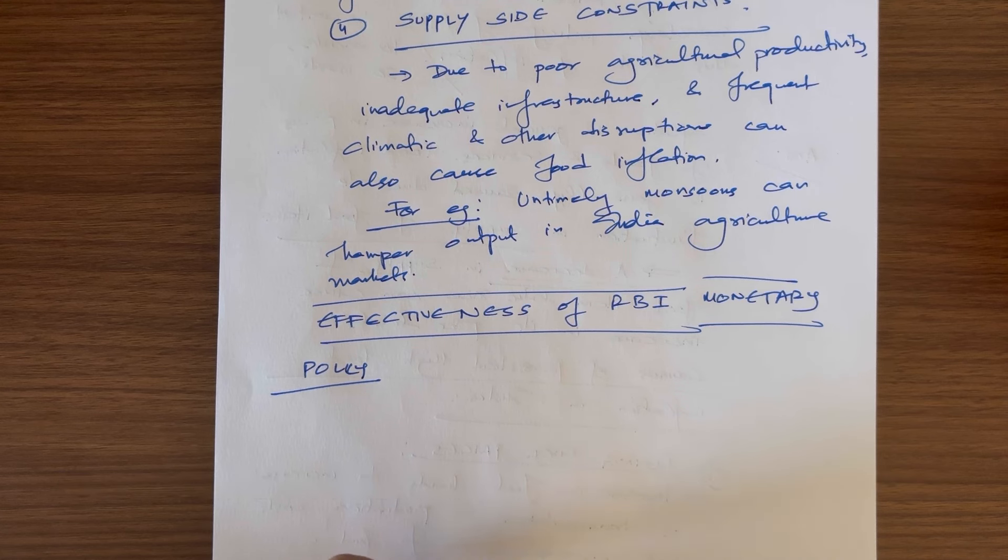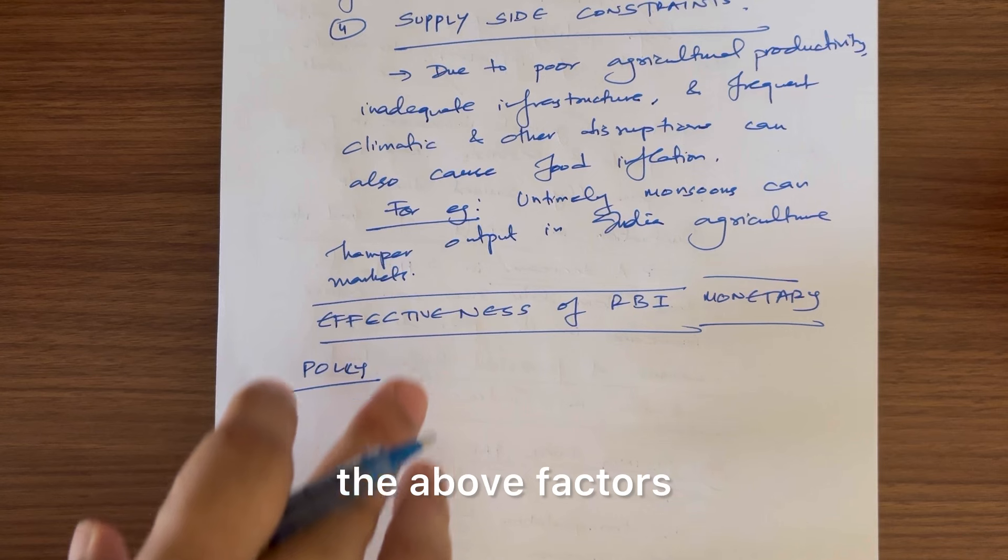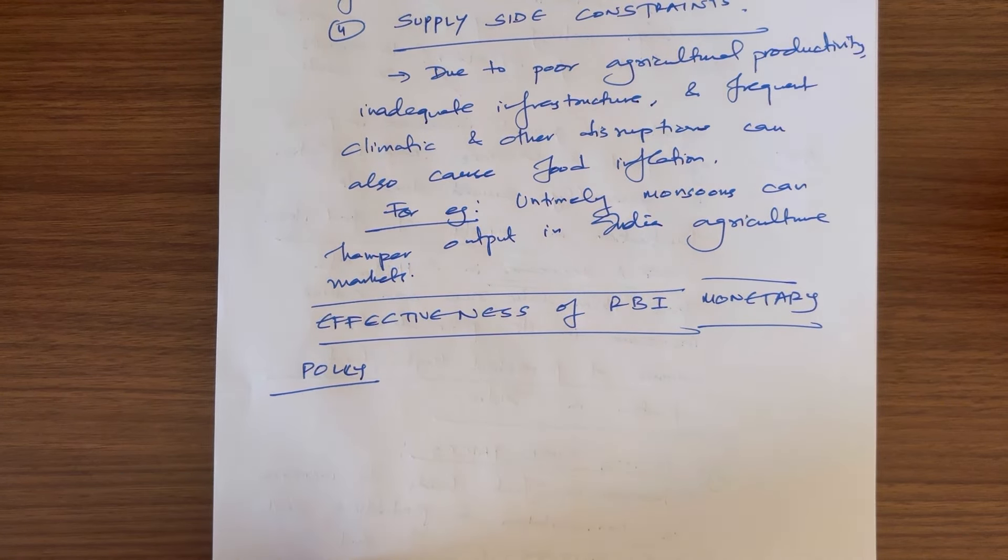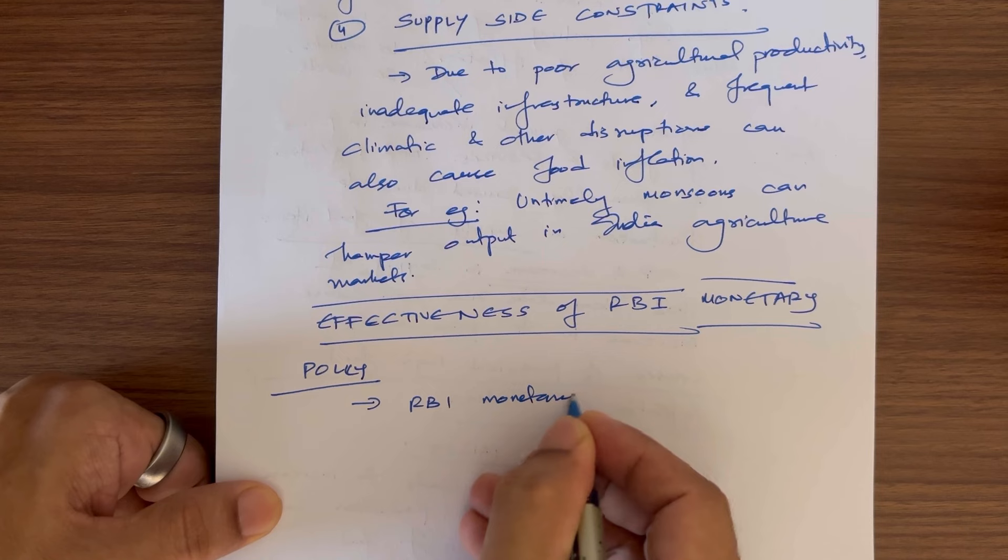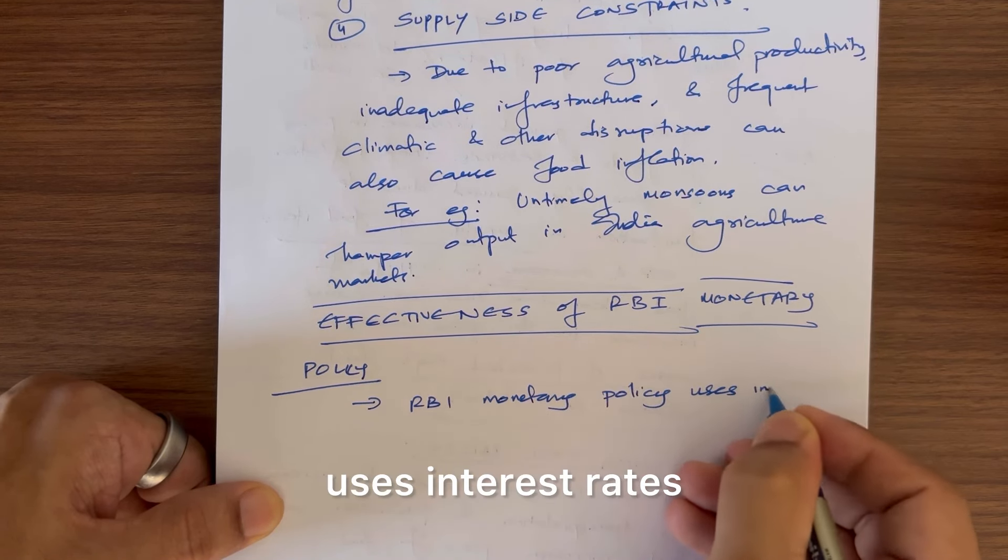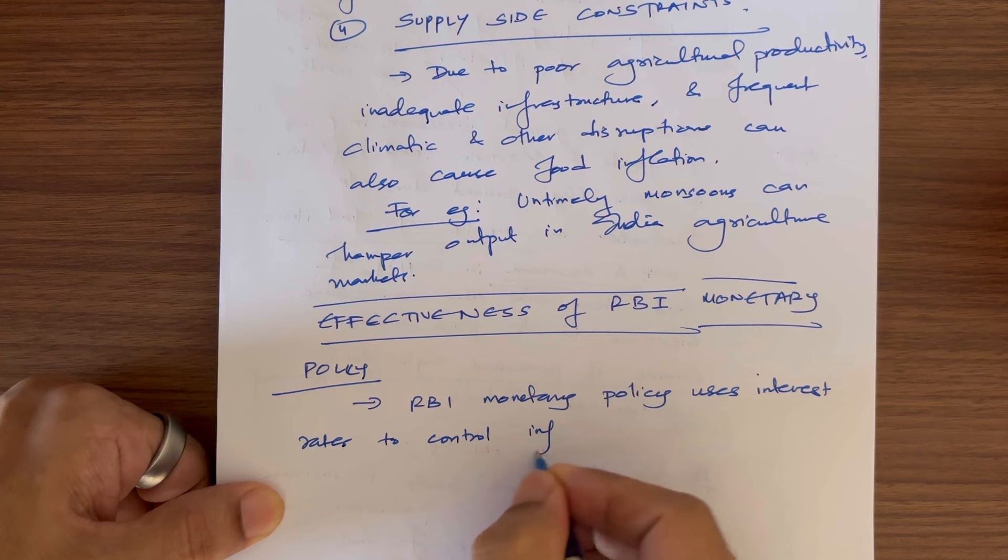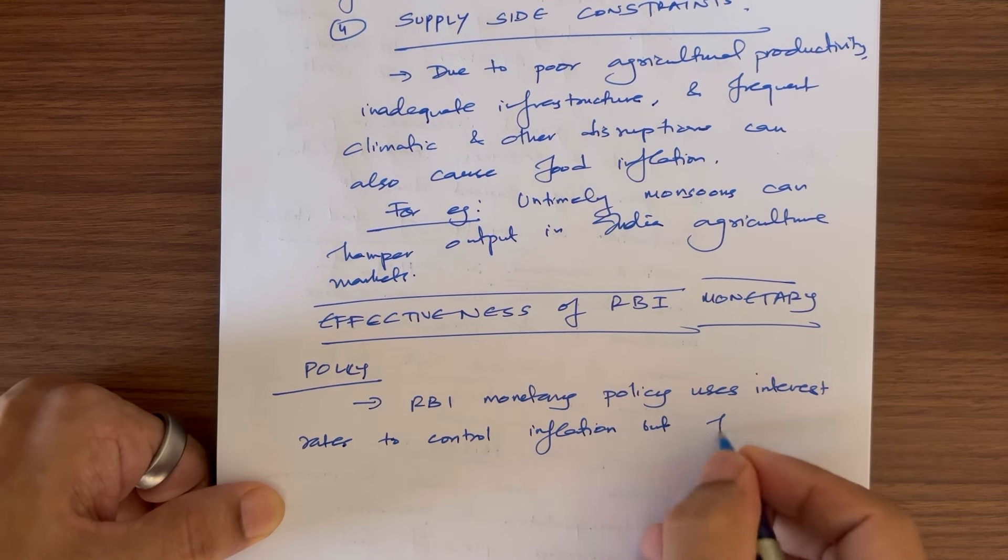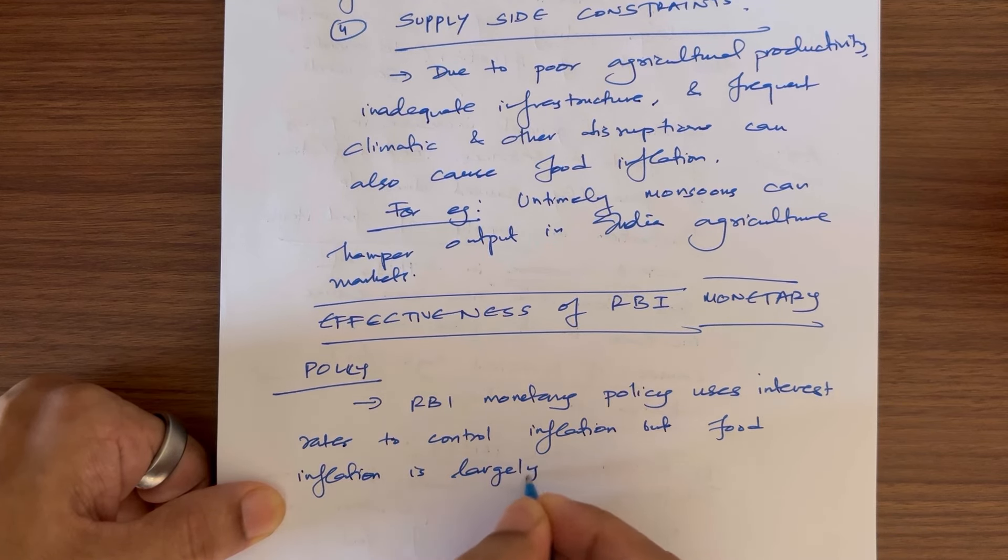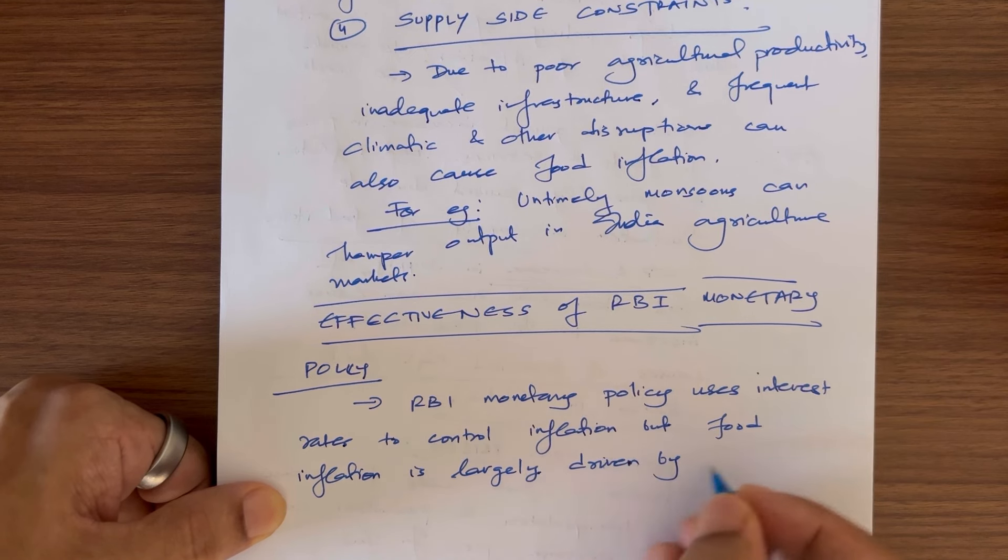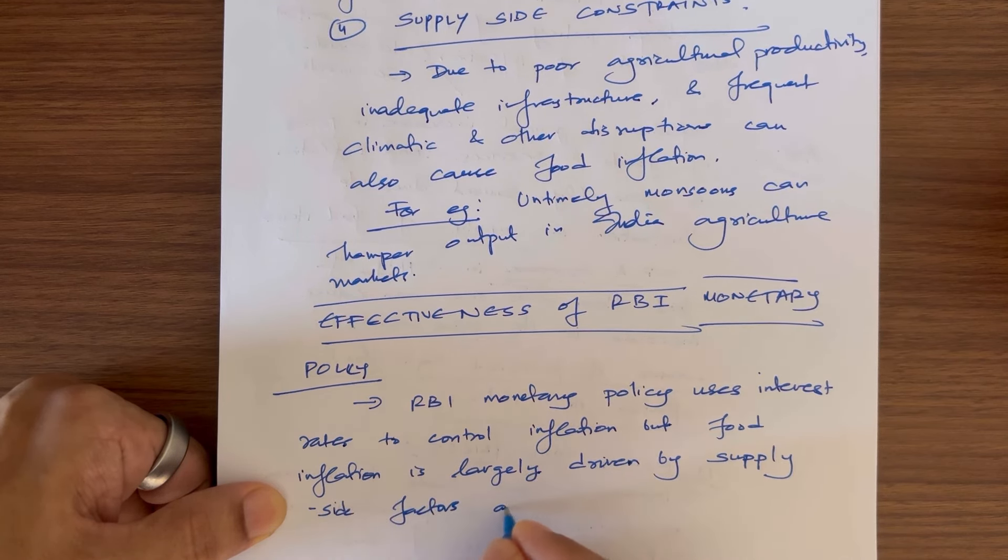However, can it control food inflation? Maybe to some extent, but it has a lot of limitations because food inflation is caused due to the above factors which are not related to interest rates directly as much. Here you can write: RBI monetary policy uses interest rates to control inflation, but food inflation is largely driven by supply side factors as mentioned above.